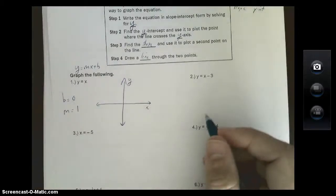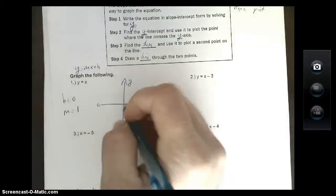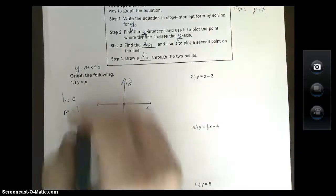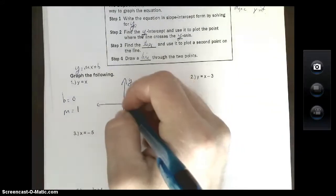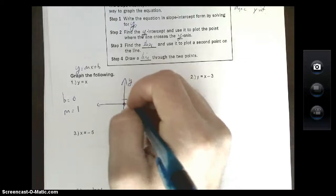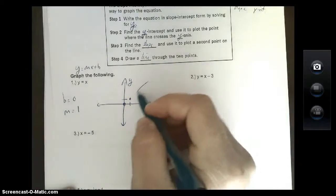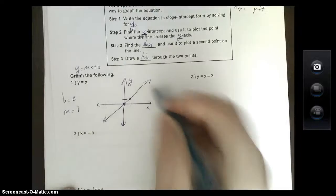Now I've got everything I need. My y-intercept is zero. Plot a point right where y is zero. Now your slope is one. Slope is rise over run, so up one over one. Plot another point. Once you have your two points, connect the dots. You've got your line.